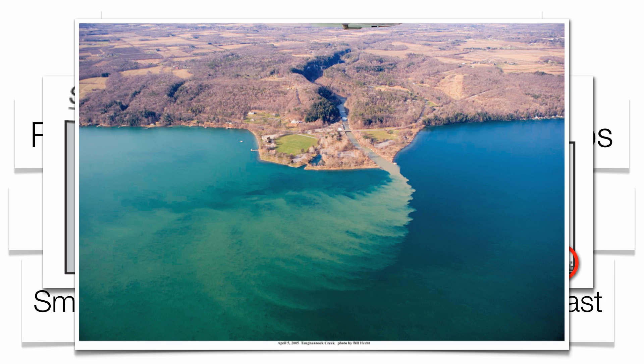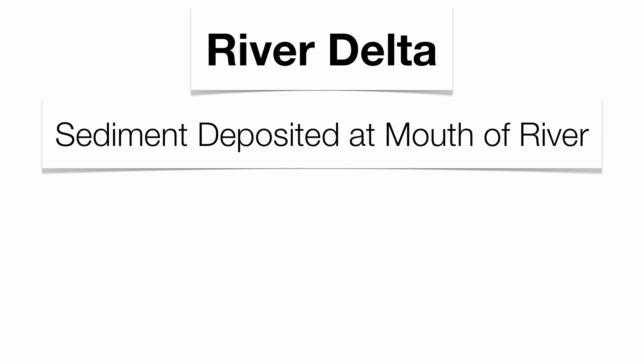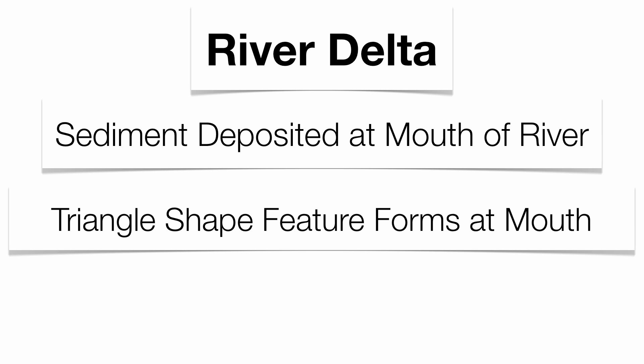Here's the Cayuga River flowing into Cayuga Lake. You can see the sediment being carried into the water — that's going to be an example of horizontal sorting. One of the big features found at the mouth of a river is what we call a river delta. It's called a delta because it's somewhat in a triangle shape, and that triangle shape feature forms at the mouth of a river in a horizontal manner.